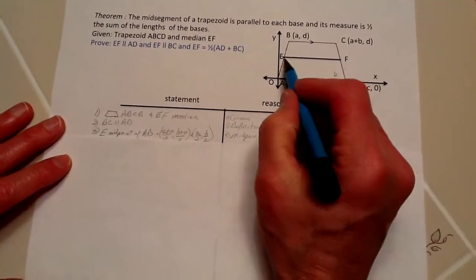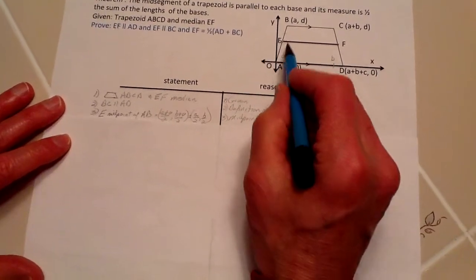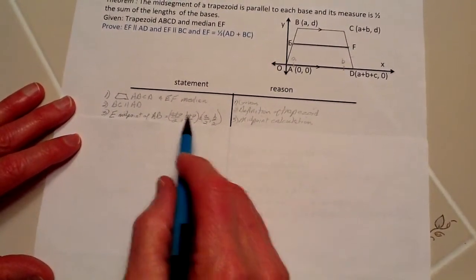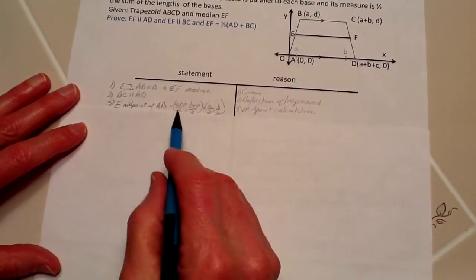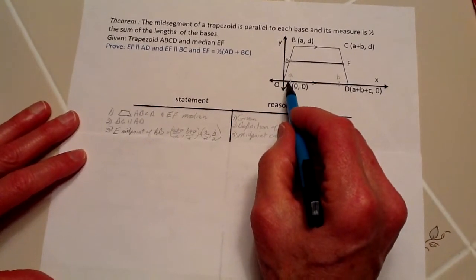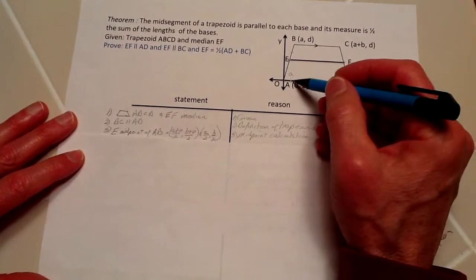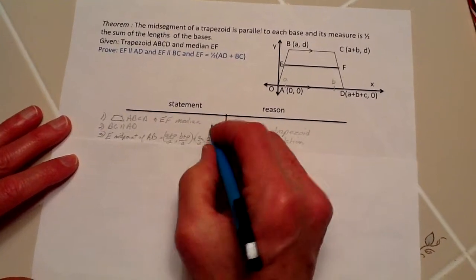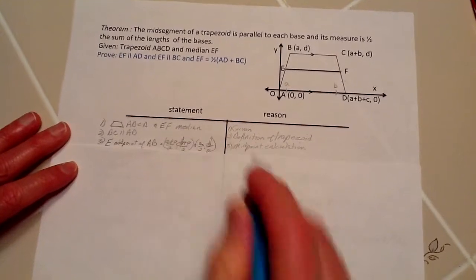We want to establish where the midpoints of E and F are. E is over A, so using the midpoint formula, we have A and it's over 0, so it's going to be A over 2 or one-half A. On the y-axis, it's going to be half of D, which is one-half D, the elevation of D.